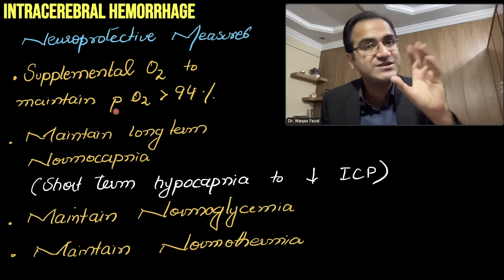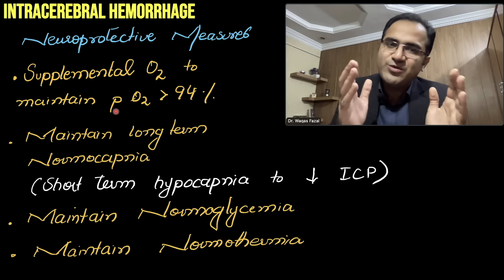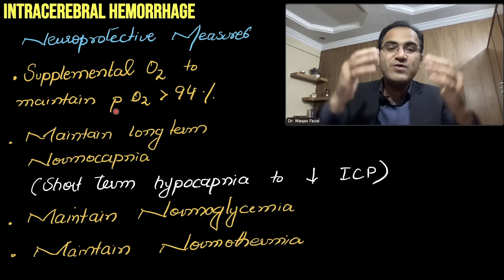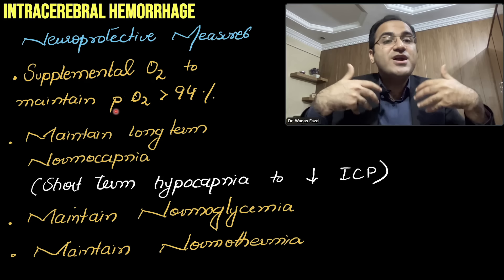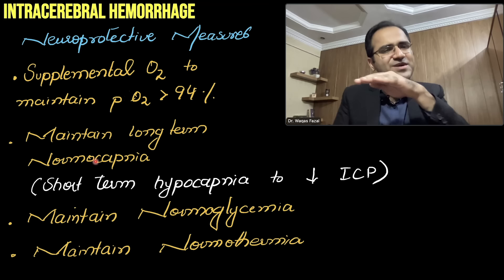Maintain normal capnia on the ventilator. For a short period, you can maintain short-term hypocapnia — low CO₂ levels — because lowering carbon dioxide causes vasoconstriction in the brain, reducing blood loss. However, for the long term, maintain normal carbon dioxide levels. Also maintain normoglycemia, as hyperglycemia has been associated with increased mortality in patients with intracranial hemorrhage.